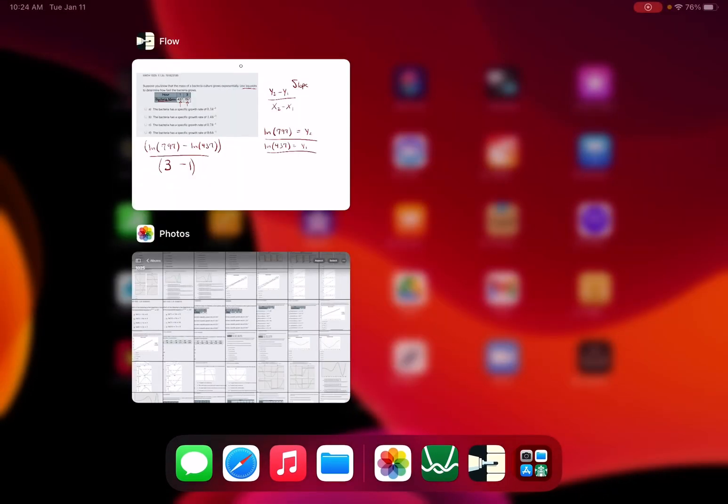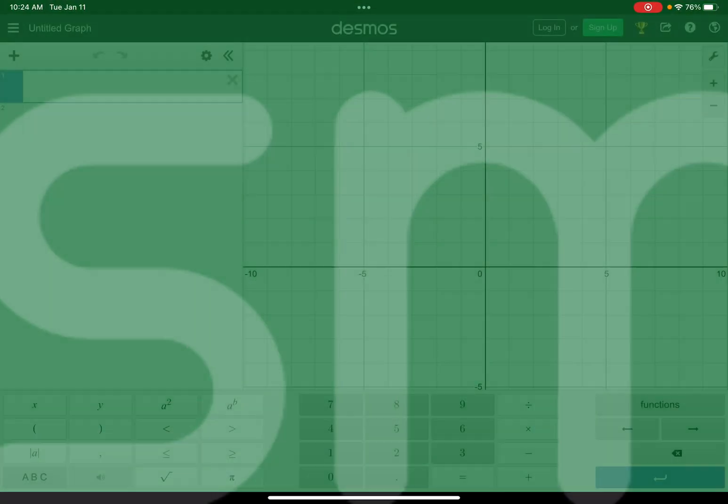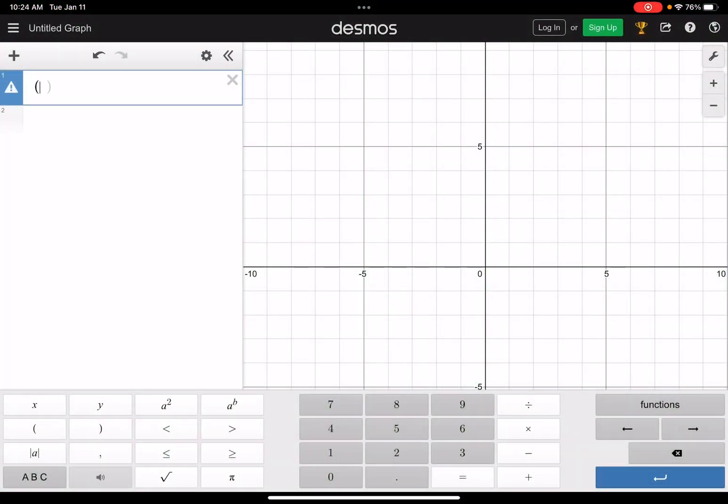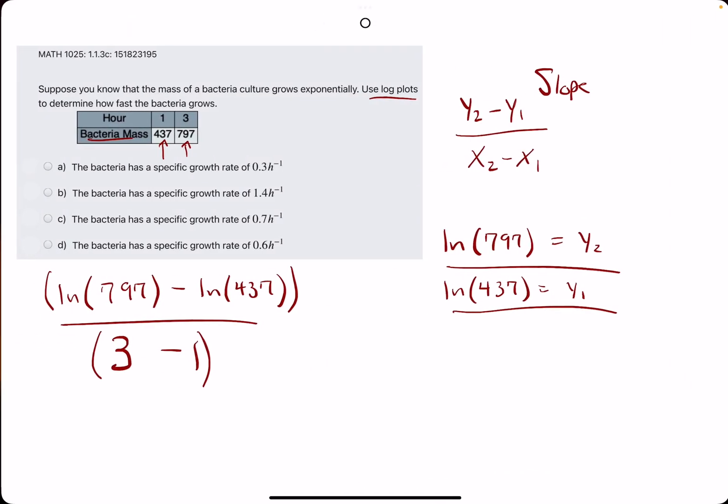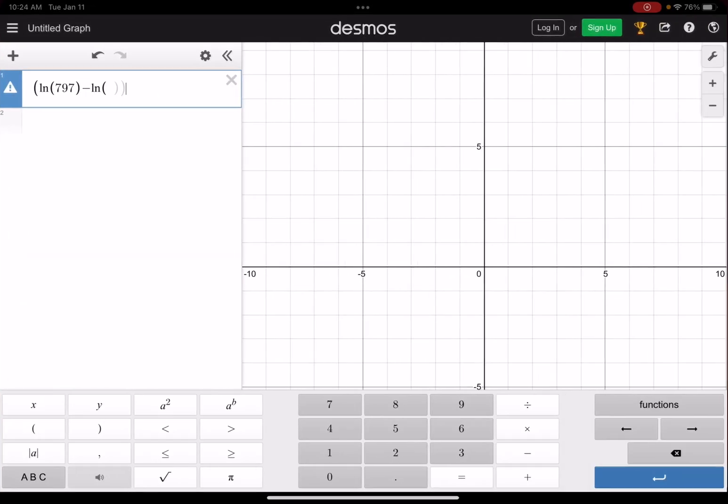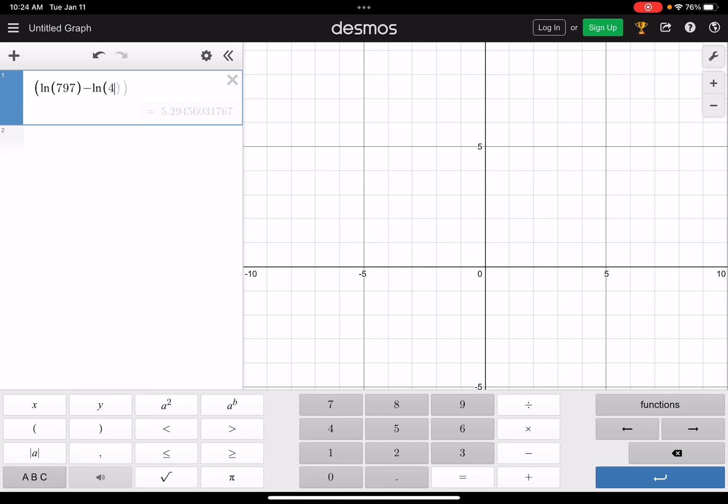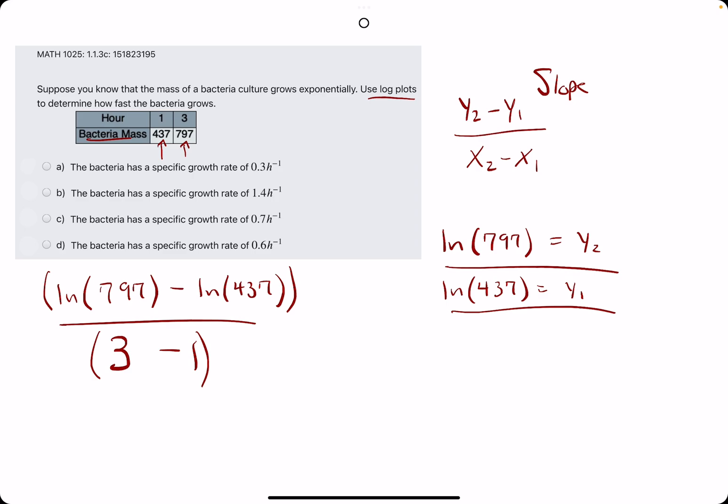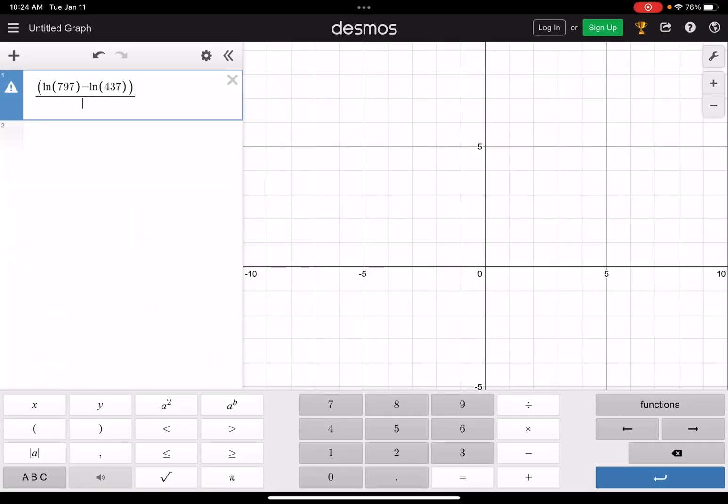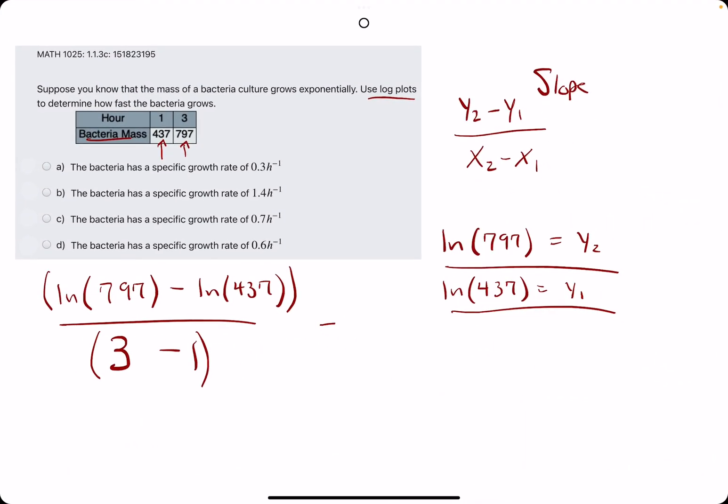Alright, so let's open Desmos and see what we can do. Let's do big parentheses. We'll do ln of 797, close that, minus ln of 437. And we will divide this whole difference by 3 minus 1. Alright, so we get about 0.300, so we can probably just call that 0.3.